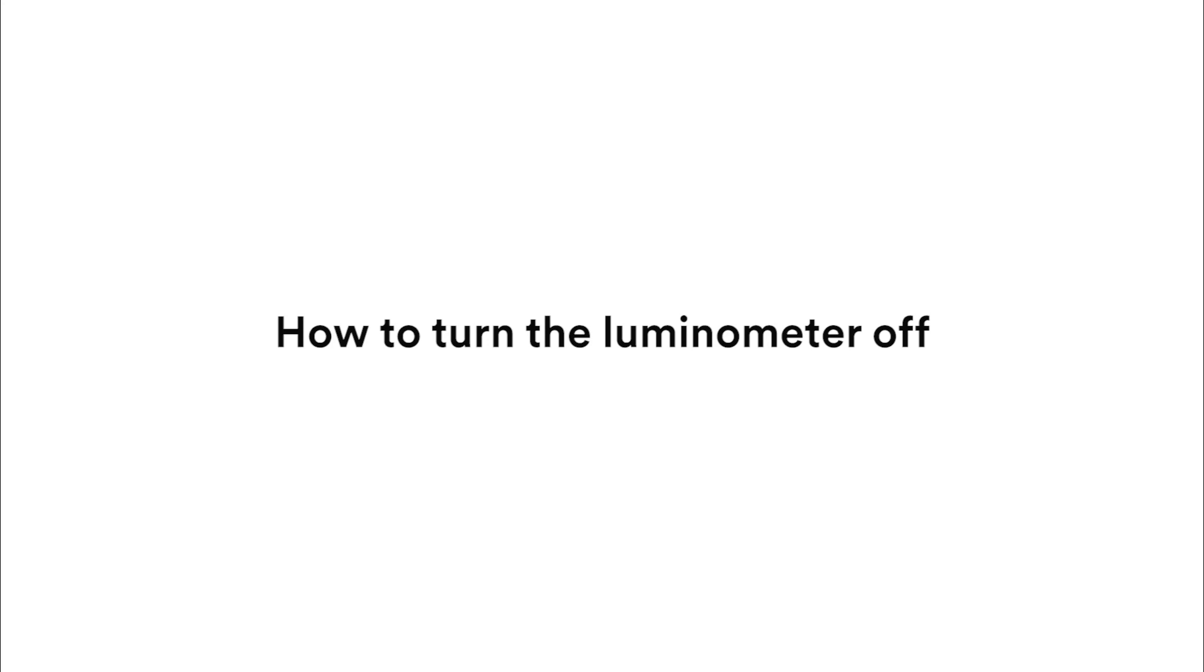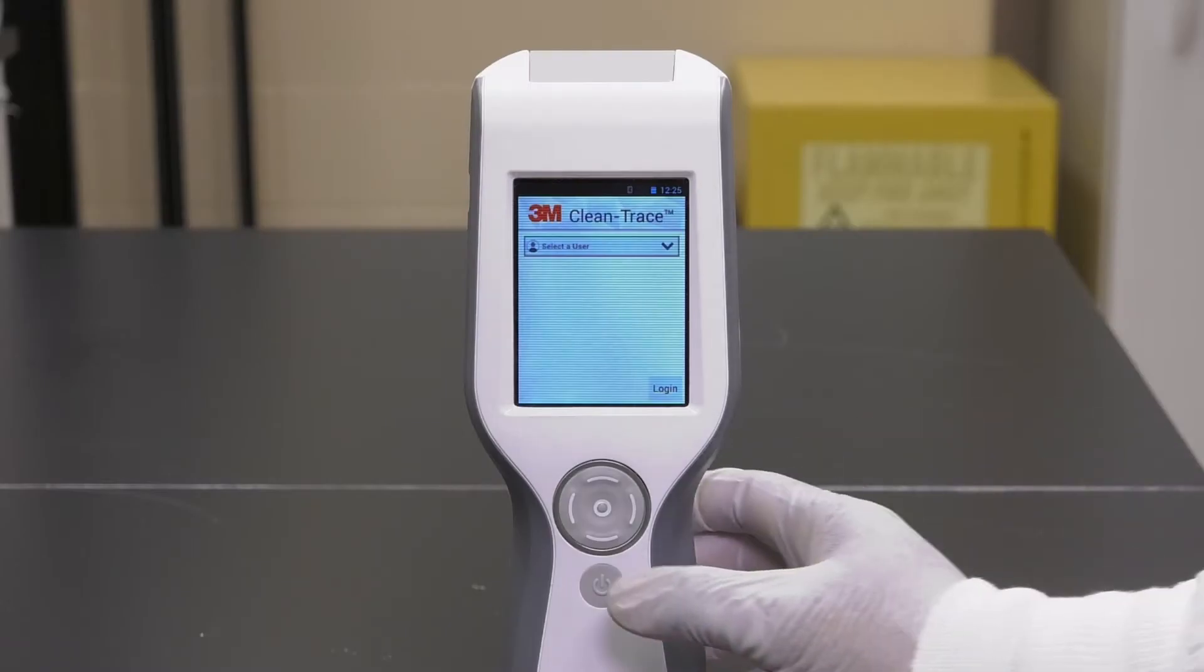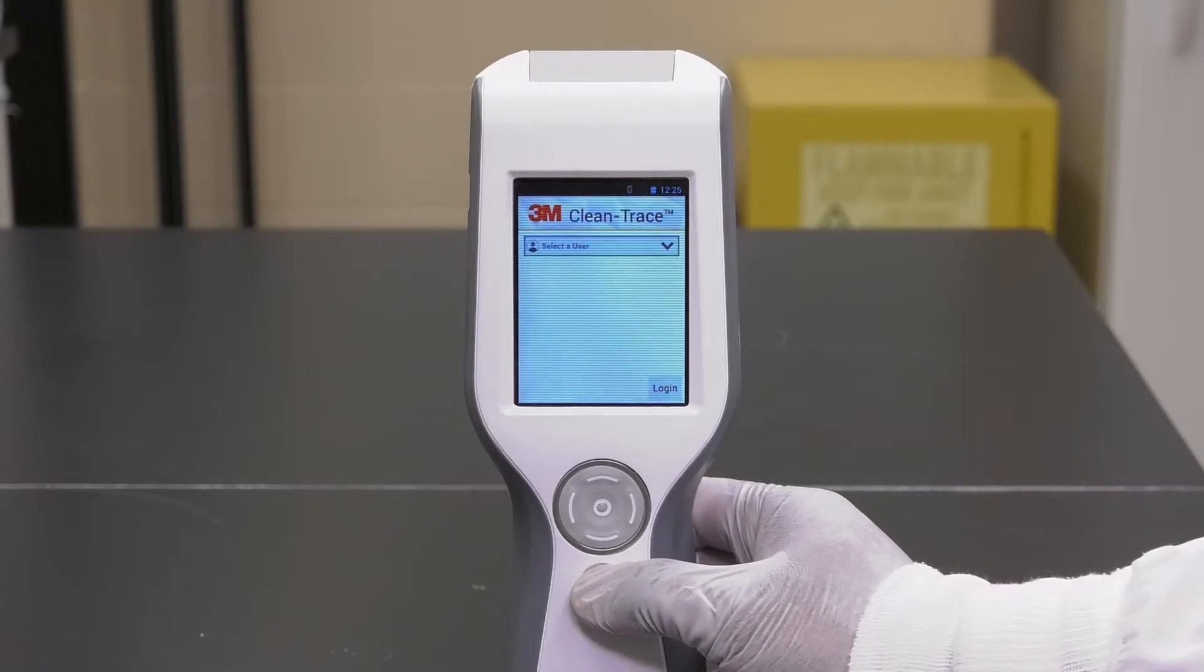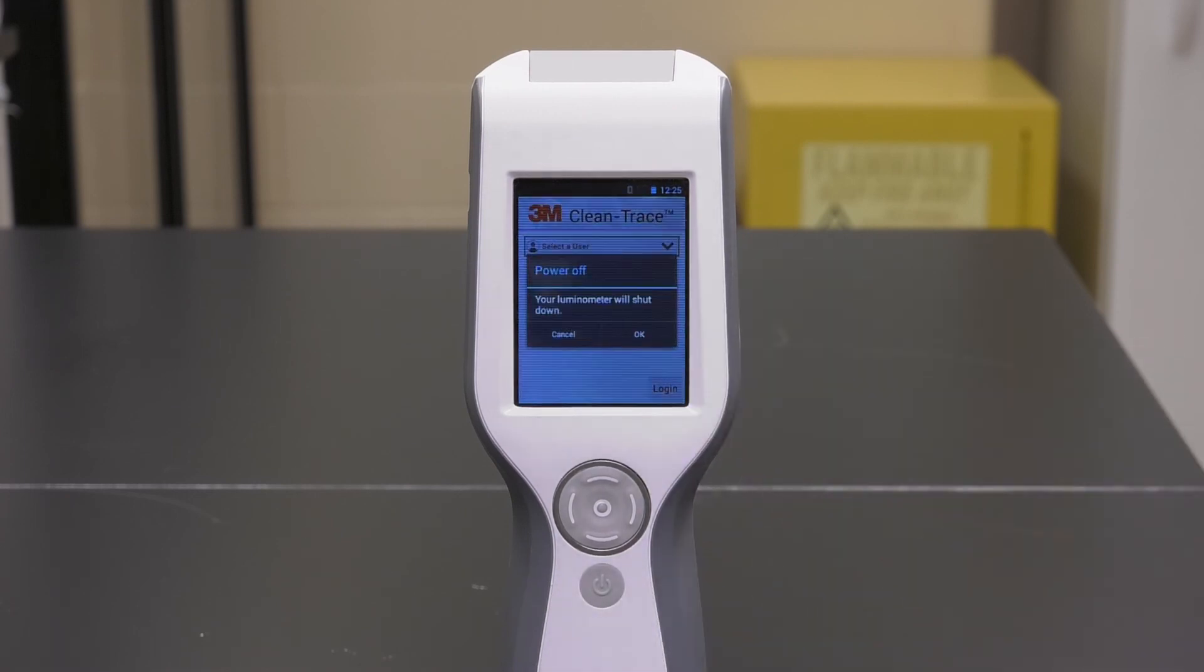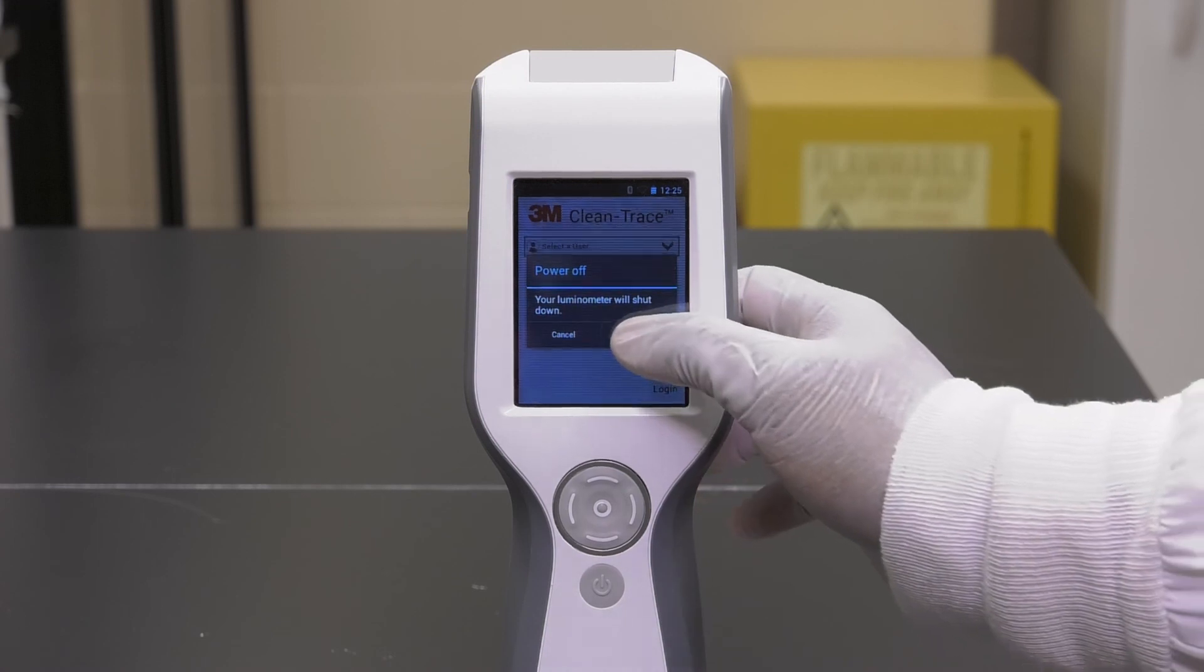To turn the luminometer off, press and hold the on-off button for about 3 seconds. A power-off bar will appear. A second bar will appear asking if you want to turn it off. Press OK.